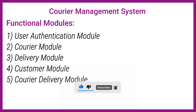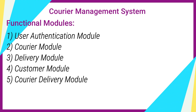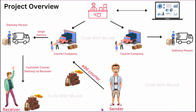There are multiple things present in these functional modules which we'll see in detail later. As of now, let's see the basic overview of the project. The project contains four modules: Administrator, Courier Company, Delivery Person, and Customer.